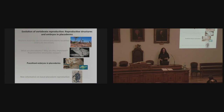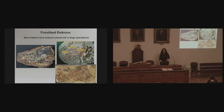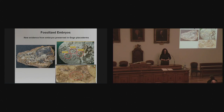Having run through the importance of placoderms and reproductive structures and claspers, I want to move on to fossilized embryos in placoderms. I've already told you that ptyctodontids have embryos and arthrodires have embryos, but what can those embryos tell us about vertebrate evolution? Since placoderms are primitive jawed vertebrates, features we can see in them can be used to interpret character evolution in more derived jawed vertebrates.